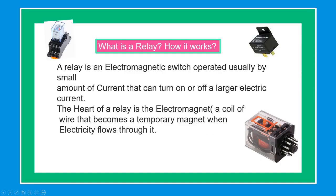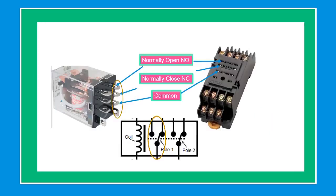Our topic for today is: what is a relay and how does it work? A relay is an electromagnetic switch operated usually by a small amount of current that can turn on or off a larger electric current. The heart of a relay is the electromagnet — a coil of wire that becomes a temporary magnet when electricity flows through it. This is a relay showing which pin is normally open or normally closed contact.